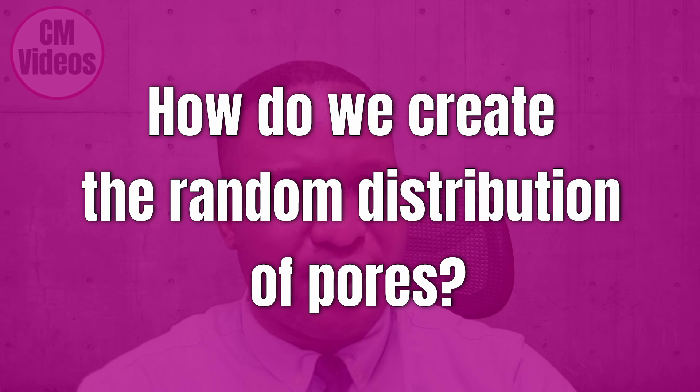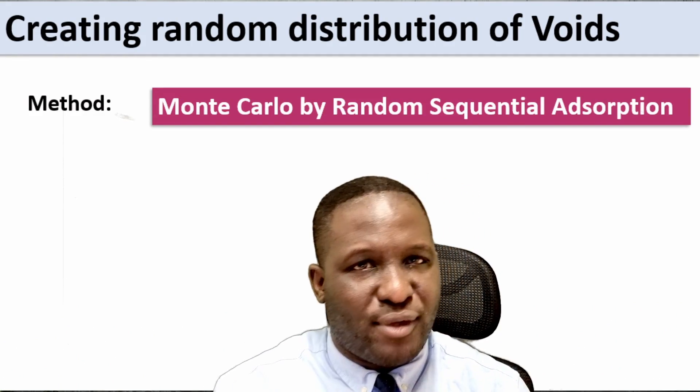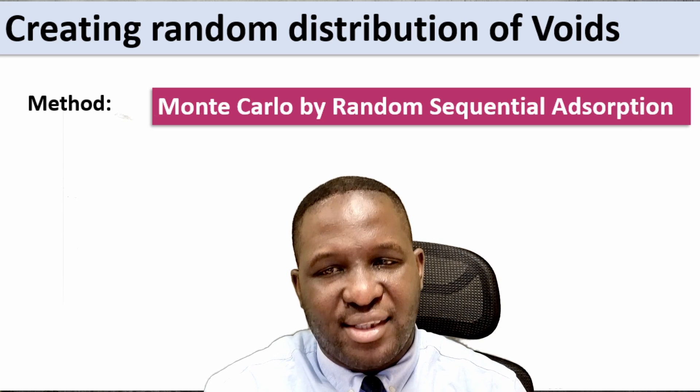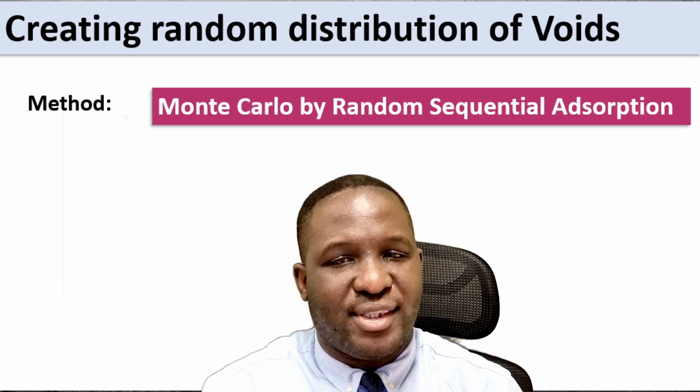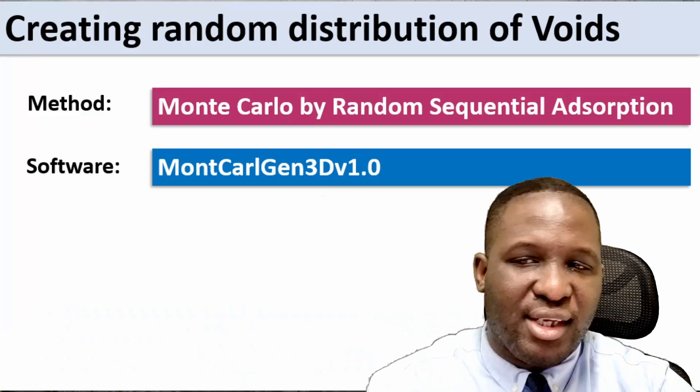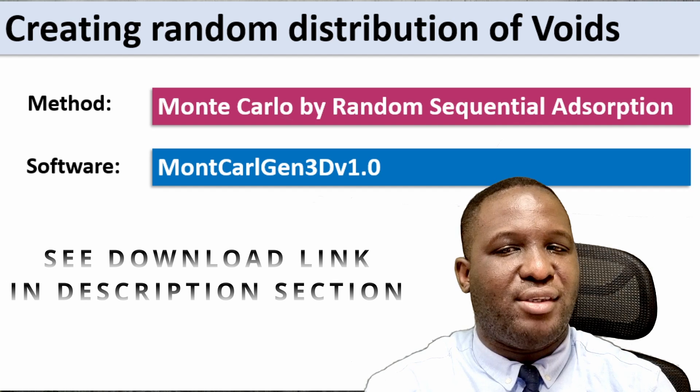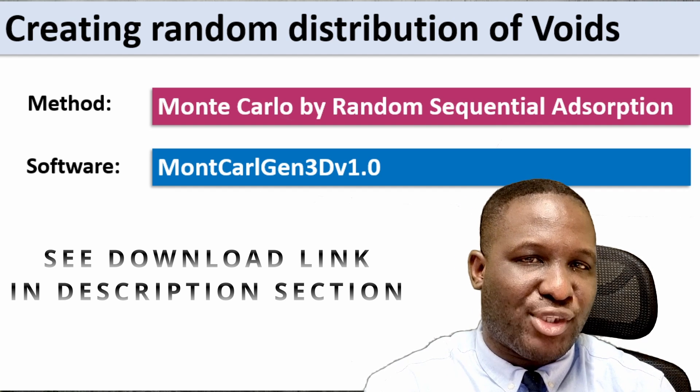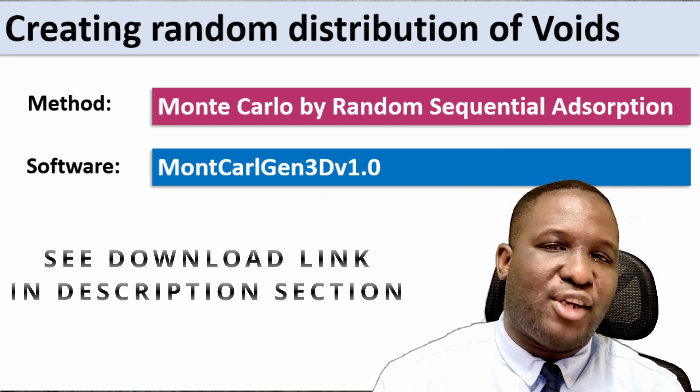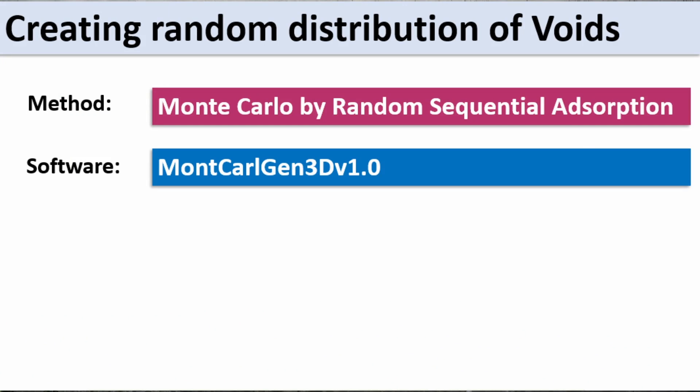How do we actually go about creating this randomness that we talked about? The approach that we're going to use is something that is very common, something I've spoken about a lot on this channel. This is the Monte Carlo approach using random sequential adsorption. I've put a video here which can help you understand more about this Monte Carlo approach. I'm using a software called Monte Carlo Gen 3D version 1.0, implementing this Monte Carlo approach for a 3D domain.